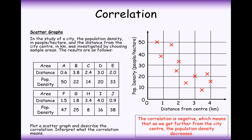We should see here that there is a negative correlation. What does this mean for our data? It means that as we get further out from the city, the population density decreases. A typical exam question will ask you to relate the correlation back to the context of the question, and a sentence like this is what you'll have to write as an answer.